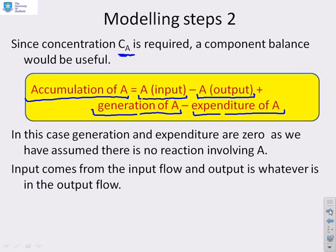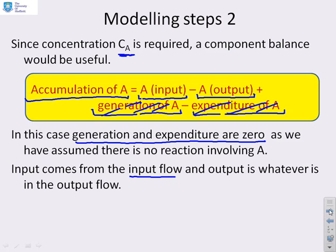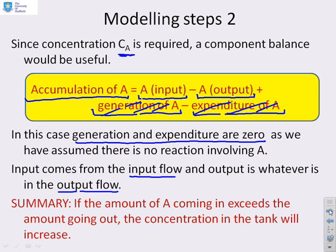For this particular video we're going to assume that generation and expenditure are zero — there's no reaction. So those terms cancel, and the accumulation of A is basically how much you put in minus how much you take out. What comes in comes from the input flow, and what goes out goes out in the output flow. If the amount of A coming in exceeds the amount going out, the concentration in the tank will increase — giving us a rate of change of concentration — and that's what we'll use to get our model.